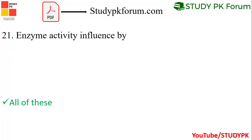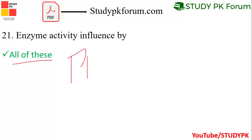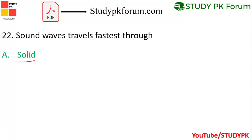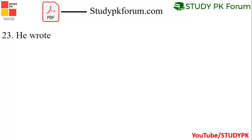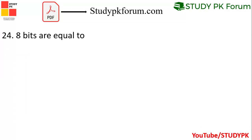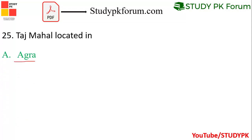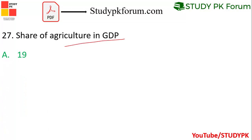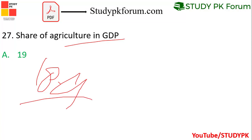Question 21: Sound waves travel fastest through which medium? Solid is the answer. Additionally, BIOS stands for Basic Input and Output System — that is the right answer. The share of agriculture in GDP is approximately 18.9%, so 19% is the right answer in the paper.